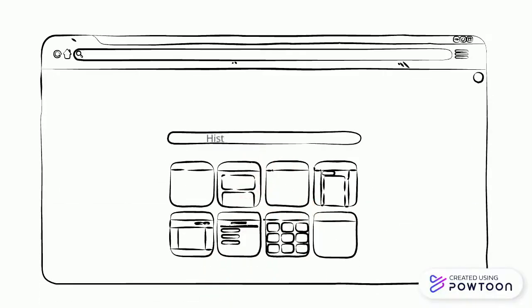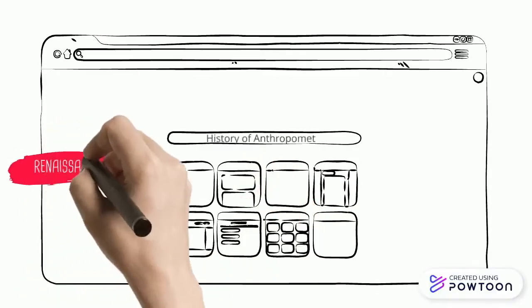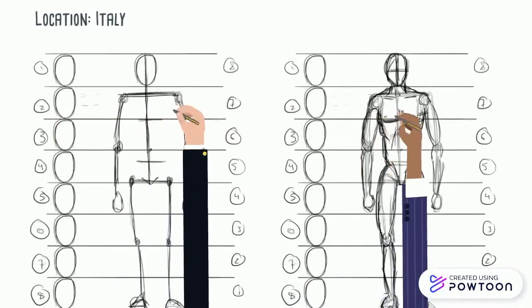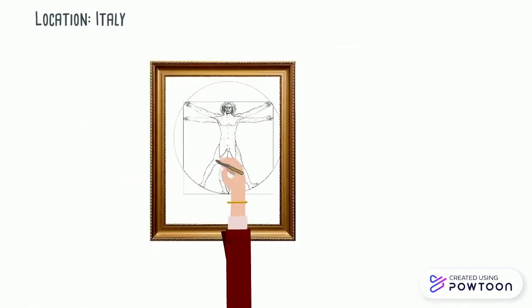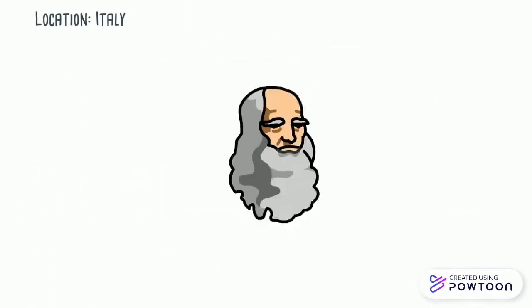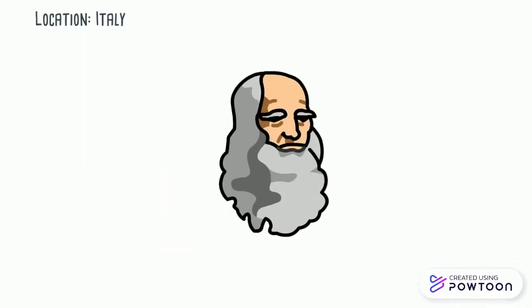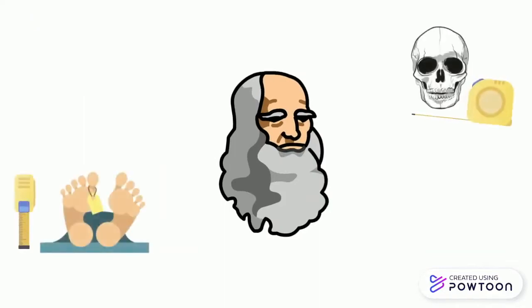Now let's talk about the Renaissance. During the Renaissance, artists used anthropometric measurements by applying human proportions. The best example is the Vitruvian Man. Did you know Leonardo da Vinci obtained human measurements by analyzing cadavers?